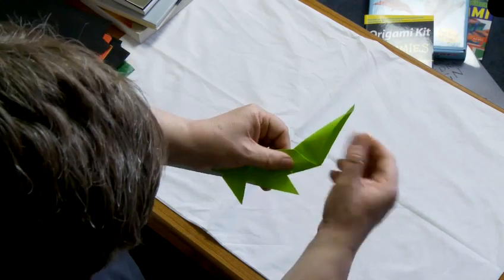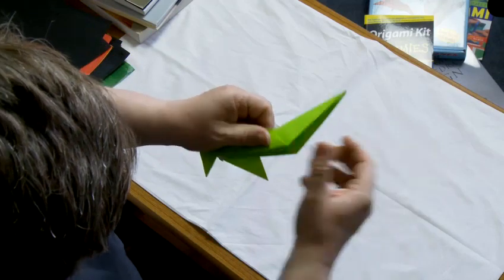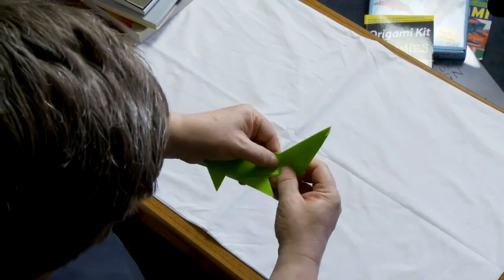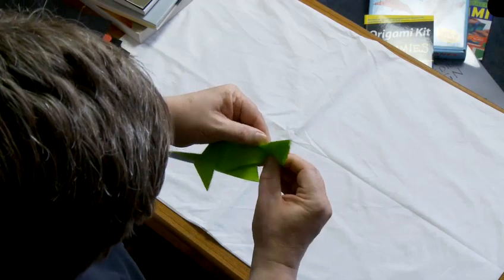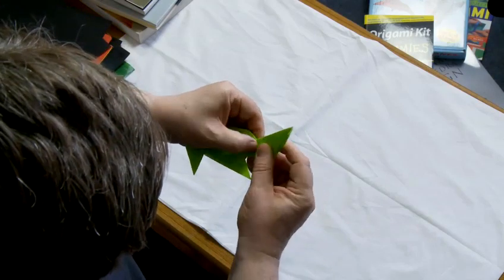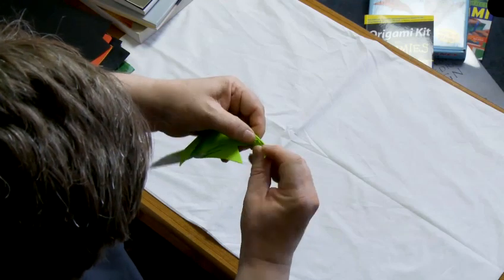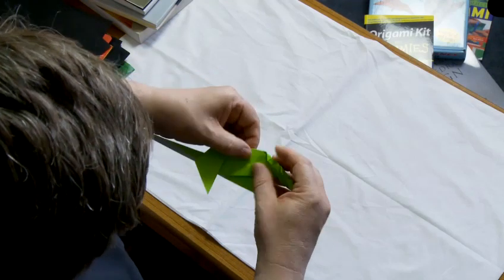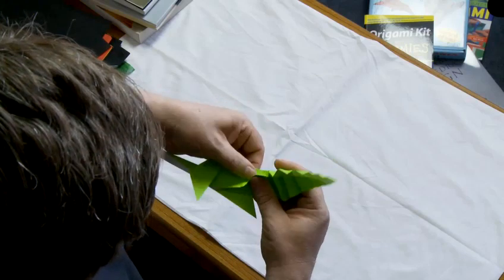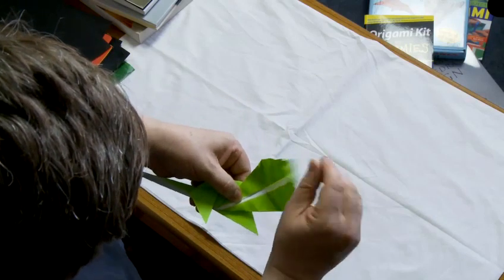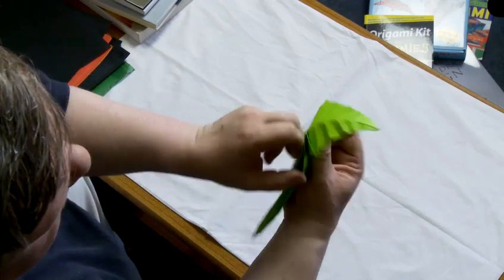Fold that over on itself the other way. And then we're going to concertina this top piece of the leaf. Fold it backwards and forwards, backwards and forwards on itself. And open it all up. And when you open it up, there's a leaf. It's all nice and curly and leafy.